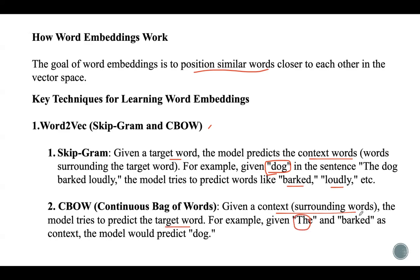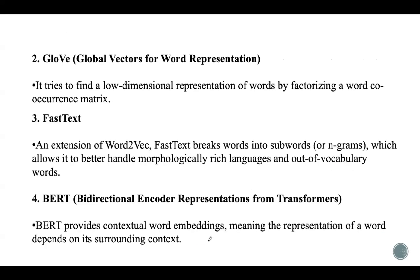CBOW is the opposite of skip-gram — if the surrounding context words are provided, the model should predict the target word. For example, based on surrounding words 'the' and 'bark,' the model should predict the target word 'dog.' The second model is GloVe, which stands for Global Vectors for Word Representation. Unlike Word2Vec, which is based on local context, GloVe is based on global statistical information of the corpus, finding low-dimensional representations by factorizing a word co-occurrence matrix.